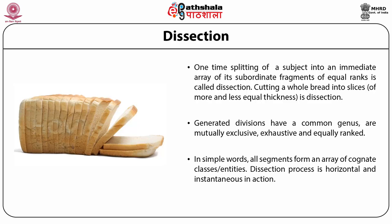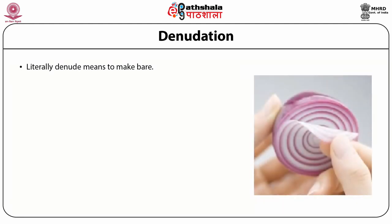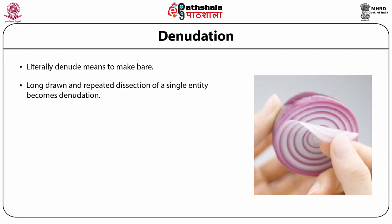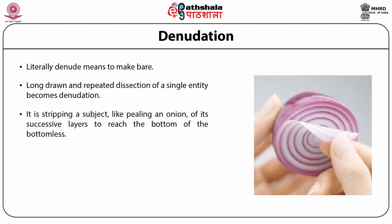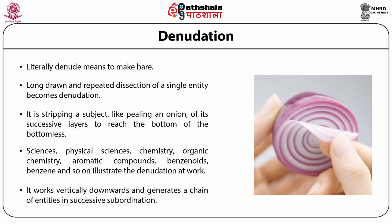Dissection process is horizontal and instantaneous in action. For example, the Indian Union is further divided into states — this act is by dissection. Denudation: Literally, denude means to make bare, remove layers one by one. Long drawn and repeated dissection of a single entity becomes denudation. It is stripping a subject like peeling an onion of its successive layers to reach the bottom. Sciences, physical sciences, chemistry, organic chemistry, aromatic compounds, benzoids, benzene — and so on — illustrate denudation at work. It works vertically downward and generates a chain of entities in successive subordination.